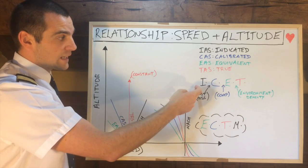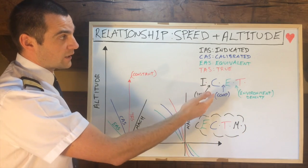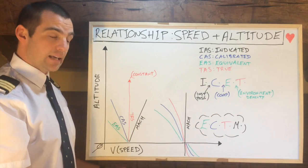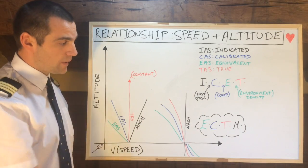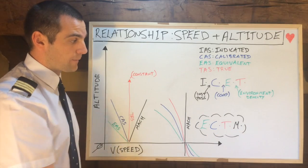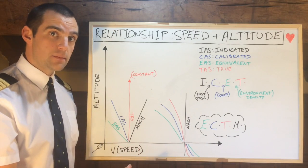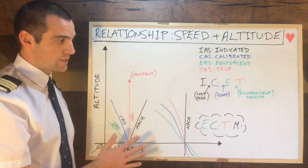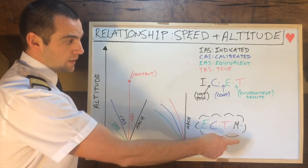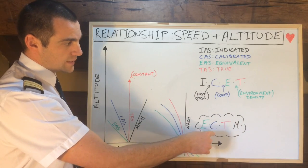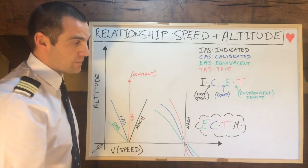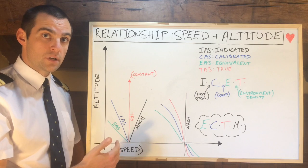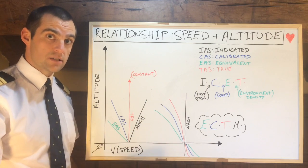So if you have your indicated airspeed and we want to calculate our calibrated airspeed, we have to correct for Instrument and Position Error. The next set of syllables to remember is Echo Charlie Tango Mike. Now there are loads of questions in the ATPL bank about this — they're super simple as long as you understand this. So Echo Charlie Tango Mike stands for Equivalent, Calibrated, TAS, and Mach number. As we climb in altitude, the relationship between the speeds changes.